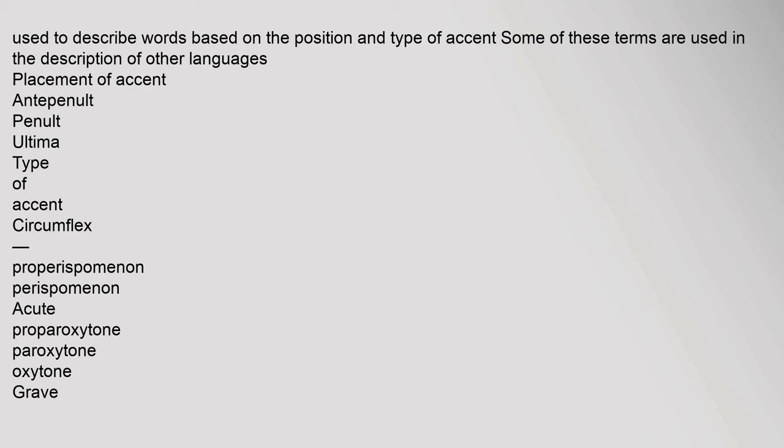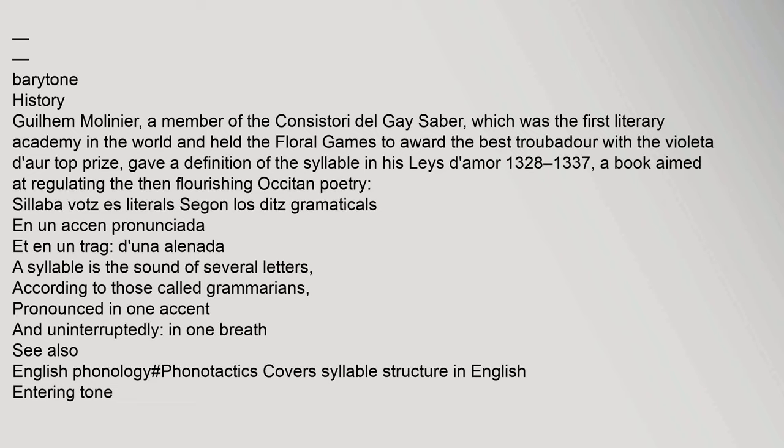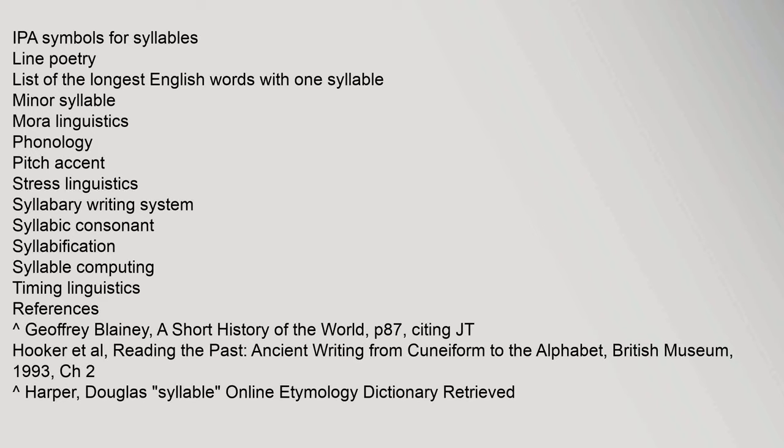In Ancient Greek there are three accent marks: acute, circumflex, and grave, and terms were used to describe words based on the position and type of accent. Some of these terms — such as proparoxytone, paroxytone, oxytone, properisp­omenon, perispomenon, and barytone — are also used in the description of other languages. Wilhelm Molinier, a member of the Consistori del Gay Saber (the first literary academy in the world), gave a definition of the syllable in his 'Leys d'Amors' (1328–1337).